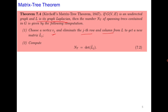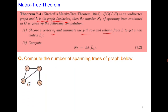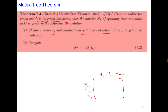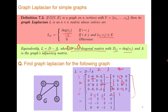This is a very interesting and important result. Let us quickly try an example. For the given graph, compute the graph Laplacian and delete v1 — that is, delete the first row and first column. The remaining matrix is indexed by v2, v3, v4.